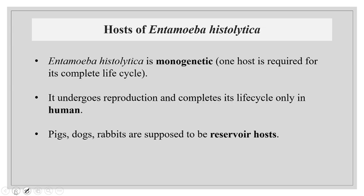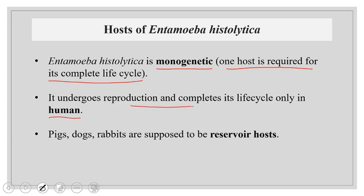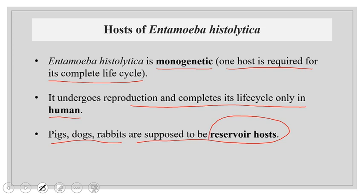Entamoeba histolytica is a monogenetic parasite — a parasite which requires only one host to complete its life cycle. That host is humans, because Entamoeba histolytica undergoes reproduction and completes its life cycle only in humans. There are also scientific reports that pigs, dogs, and rabbits are supposed to be reservoir hosts for this parasite.